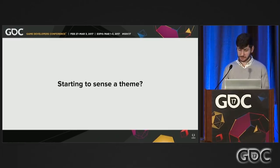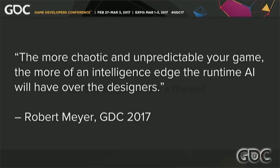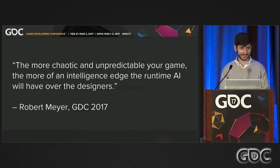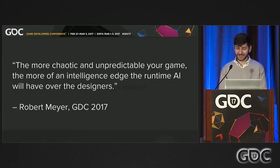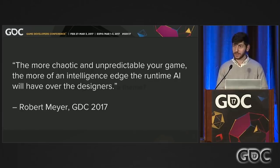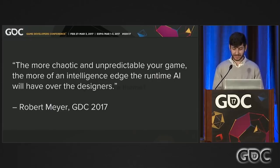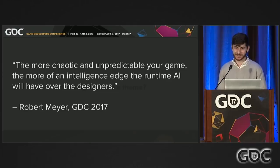So maybe you're starting to sense a theme — one I want to illustrate through my own attempt at a grandiose GDC quote on AI design: 'The more chaotic and unpredictable your game, the more of an intelligence edge the runtime AI will have over the designers.' Seeing as Just Cause 3 ranks very highly on the chaotic and unpredictability scale, this is a very important thing to respect. Fair warning though — your level designers will not necessarily appreciate you constantly telling them how much smarter your AI is than they are, so choose your words carefully. Maybe just tell them the AI will have more up-to-date information; that seems to go over okay.